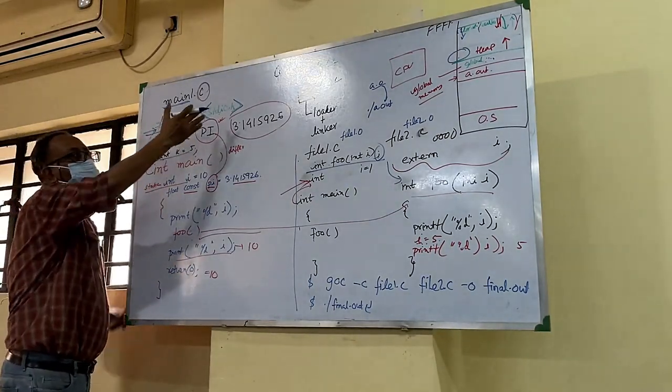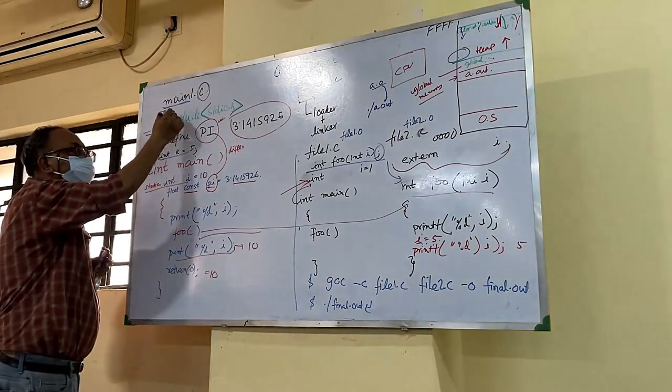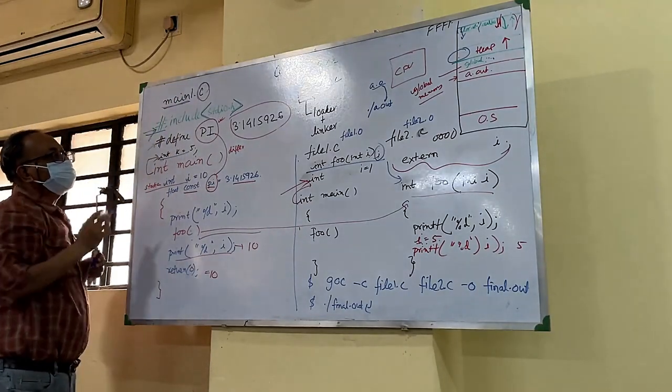Whenever you input this, all the details will be pasted there. I will see standard IO dot lib, standard lib dot H. This is compiler directives.